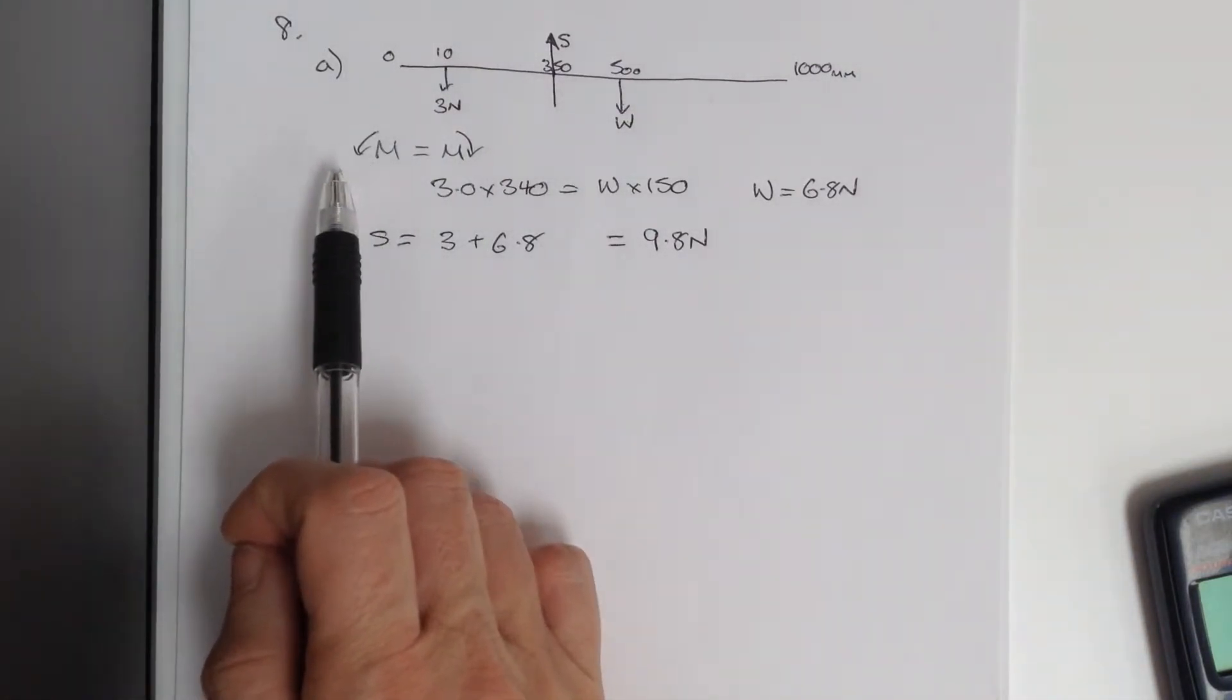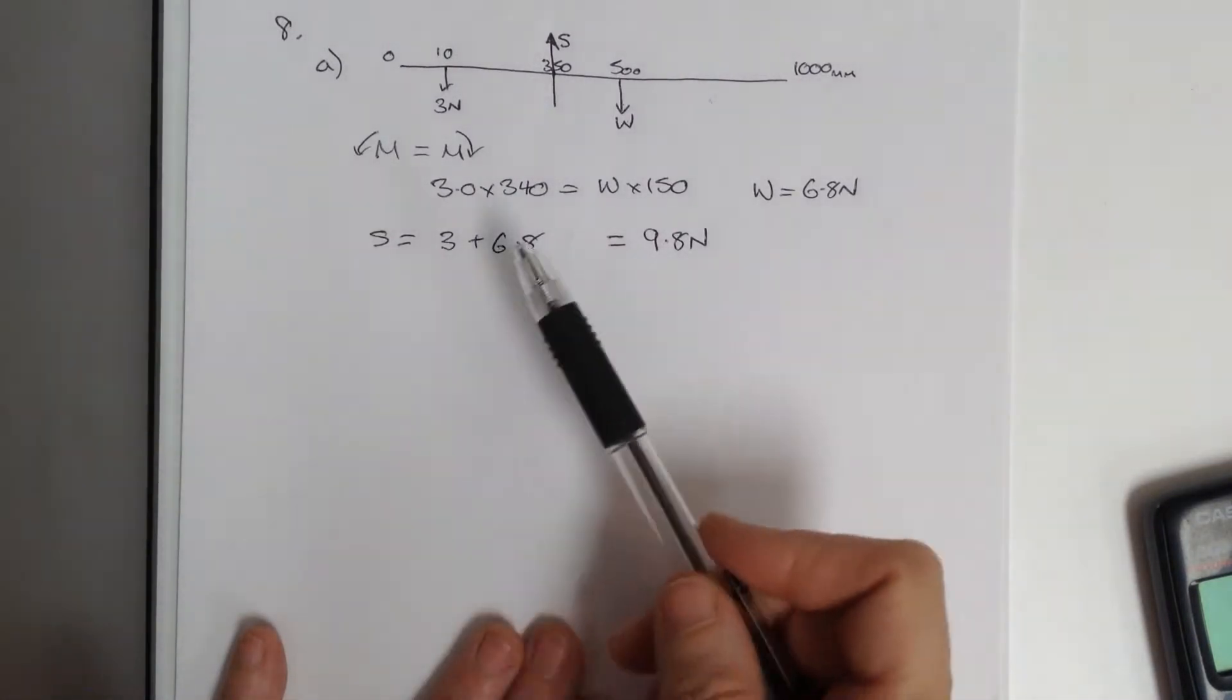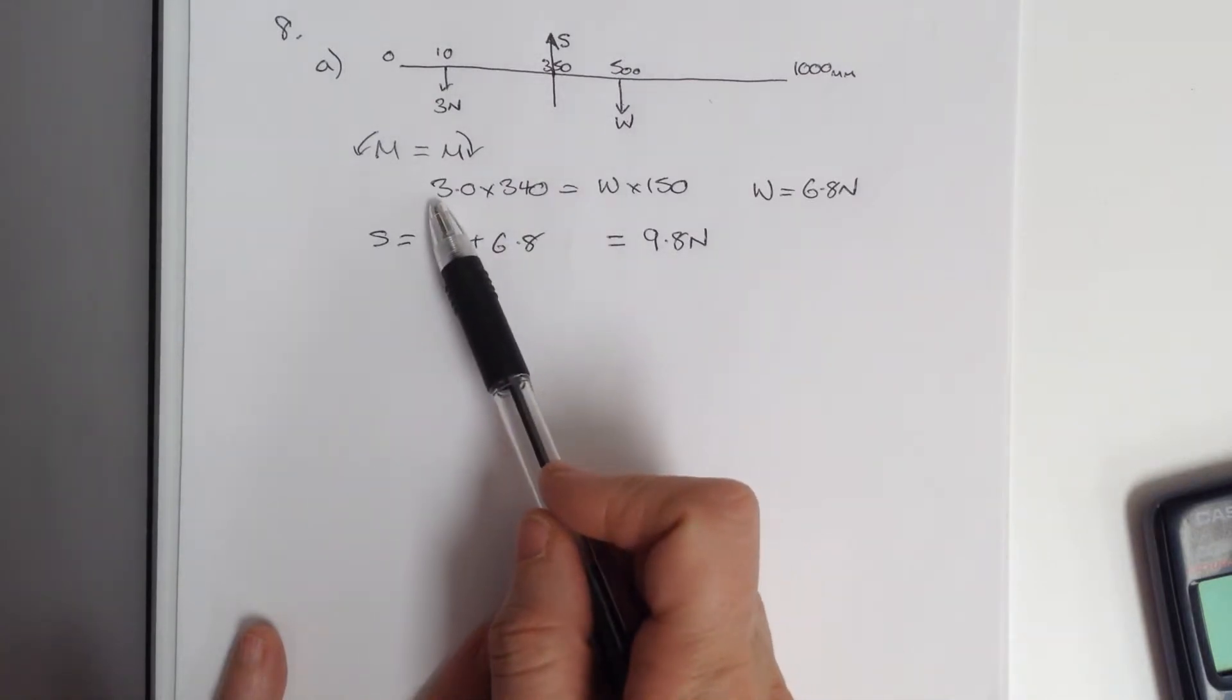So, the anti-clockwise moments are balanced by the clockwise moments. If we take moments around the pivot, the knife edge, we come up with this.